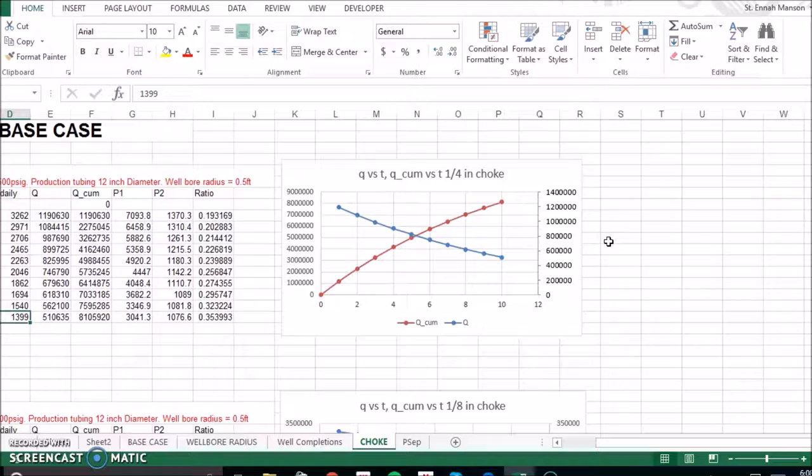In conclusion, we now know that when you increase the choke, you increase production, but the time that it takes to become subcritical flow increases, which is what we don't want. We always want it to be in critical flow.